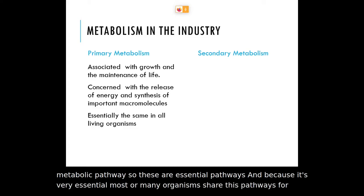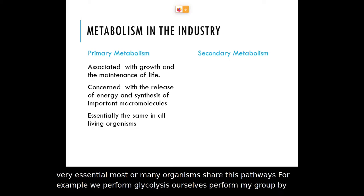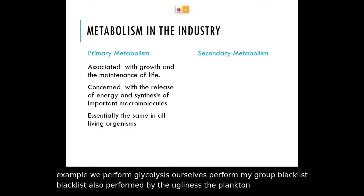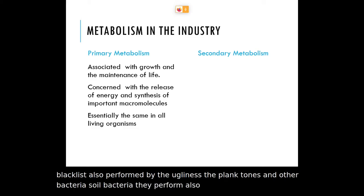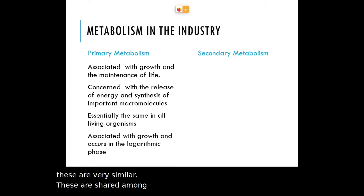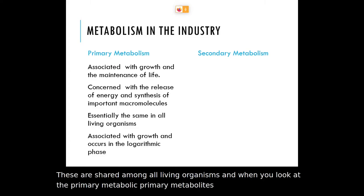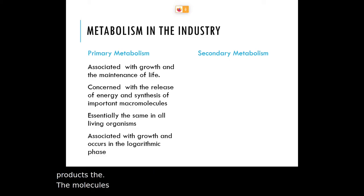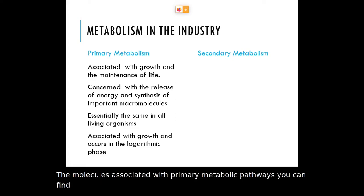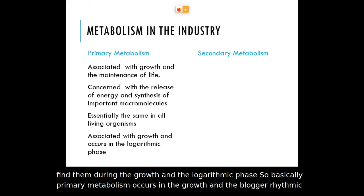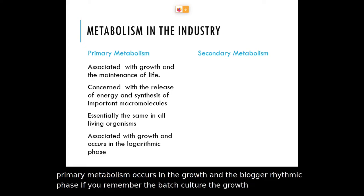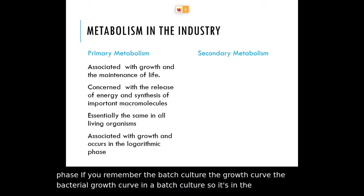Because primary metabolism is very essential, many organisms share these pathways. For example, our cells perform glycolysis, and glycolysis is also performed by euglenas, planktons, and other bacteria. These pathways are very similar and are shared among all living organisms. The products associated with primary metabolic pathways can be found during the growth and logarithmic phase. Primary metabolism occurs in the growth and logarithmic phase, as seen in the bacterial growth curve in a batch culture — specifically in the logarithmic phase.